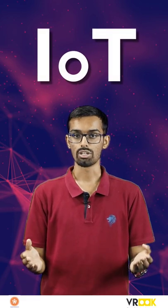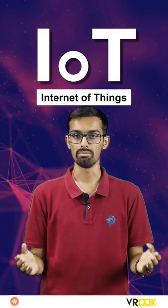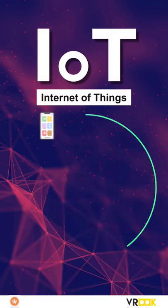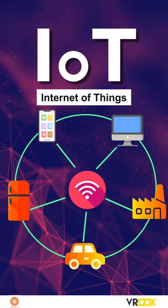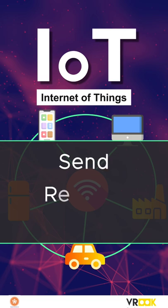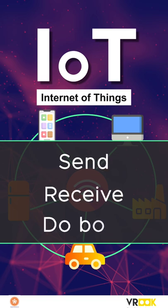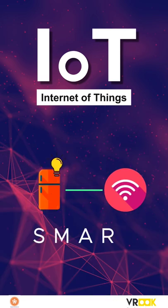IoT, the internet of things, actually means taking all the things in the world and connecting them to the internet. When things are connected to the internet, they can send information, receive information, or do both. This makes things smart.